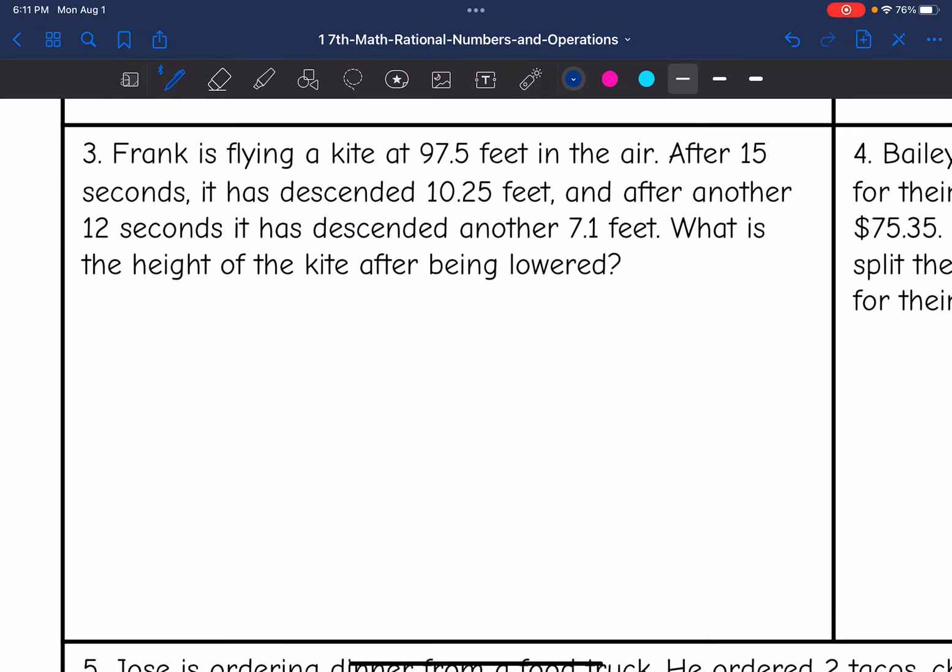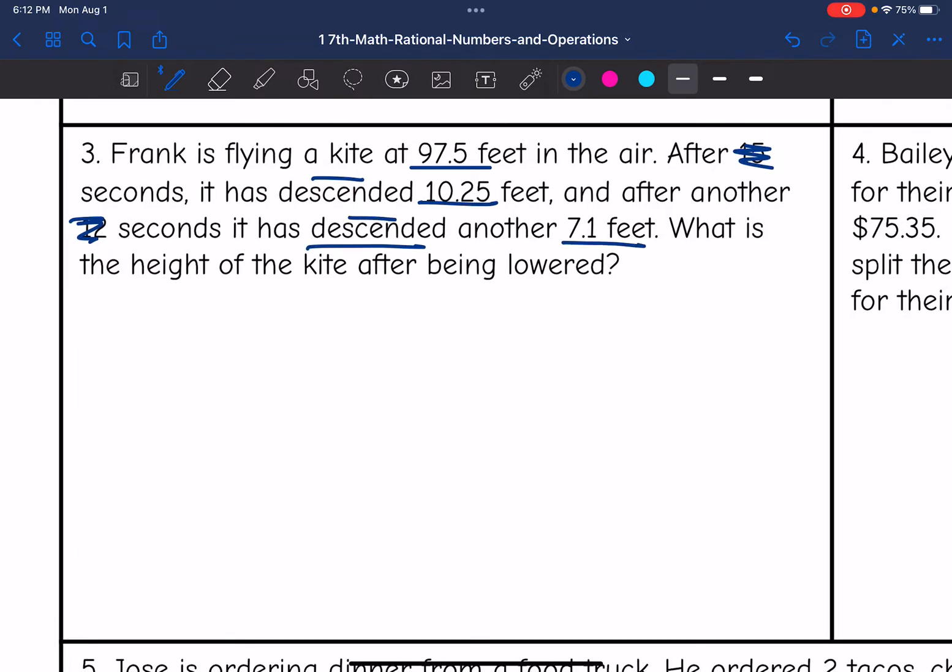Let's look at number three. Frank is flying a kite at 97.5 feet in the air. After 15 seconds, it has descended 10.25 feet, and after another 12 seconds, it has descended another 7.1 feet. What is the height of the kite after being lowered? They kind of gave us some extra numbers here. We start at 97.5 feet, and the question is just concerned with the height of the kite. So it doesn't really matter those numbers with the seconds. I'm descending, so I'm going to subtract 10.25 feet and then I descend again, so I will subtract 7.1 feet after that.